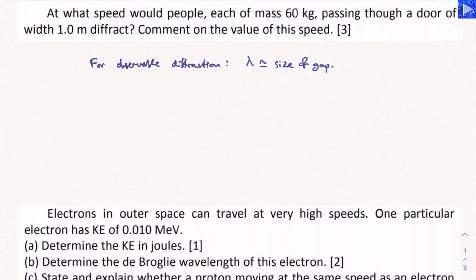Right, so now we know what the wavelength is, and this would be a de Broglie wavelength since it's associated with a particle. What we want to do is rearrange this equation and make v the subject so that we know how fast the people need to be going. So v would equal h over m lambda.